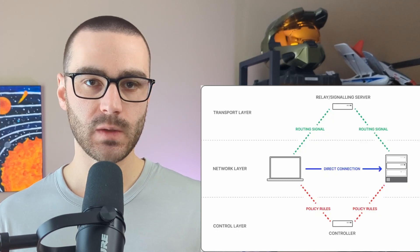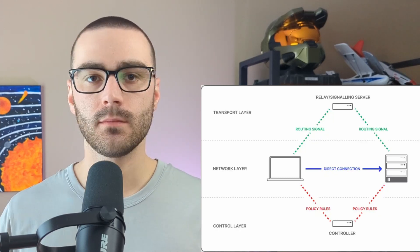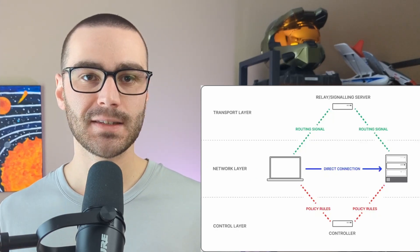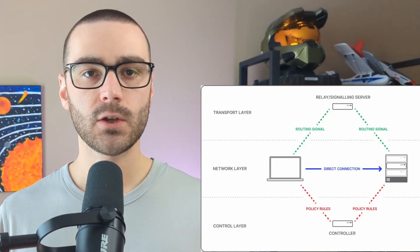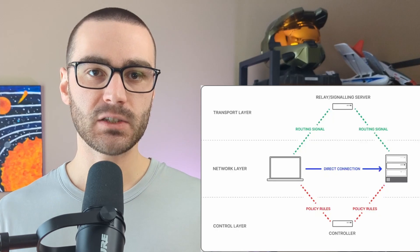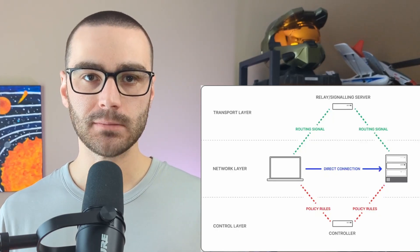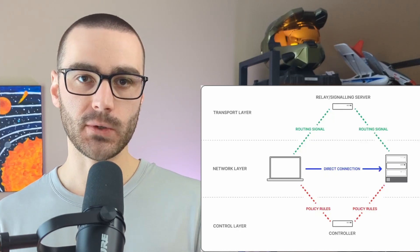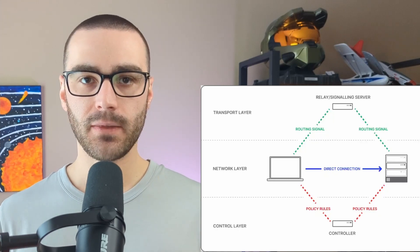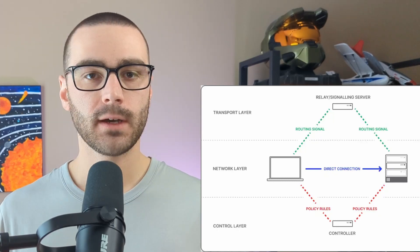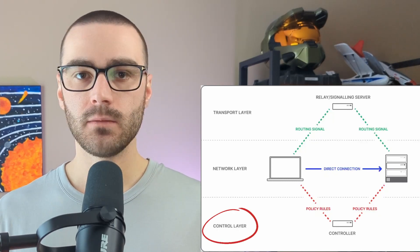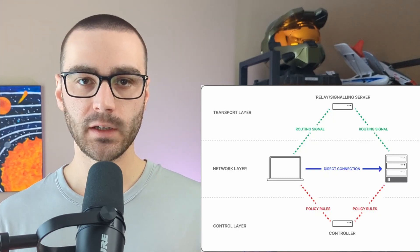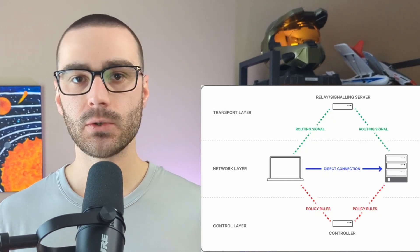TwinGate incorporates the principles of zero-trust network architecture and is logically separated into three layers. The first layer is the network layer — the set of all resources and clients that can connect to each other, located on any network and any geography. Importantly, no resource or client needs to be exposed to the public internet, unlike VPN gateways and POPs. The second layer is the transport layer, which helps establish an end-to-end encrypted direct connection between a client and a resource, and also acts as a backup relay mechanism if a direct connection cannot be established. Finally, the control layer defines policies via a web-based admin console or admin API. These policies are sent to all nodes on the network and enforced locally on each node, and it also interfaces with identity authorities like Okta to enforce user authentication.